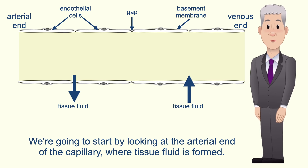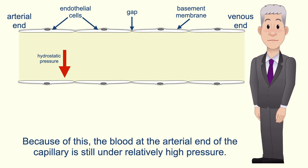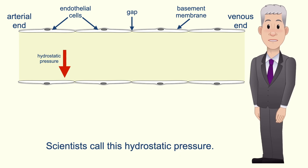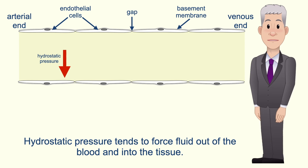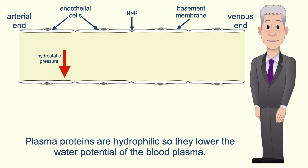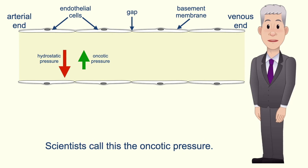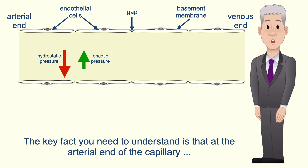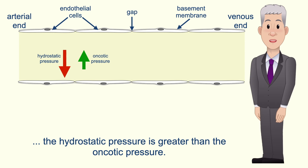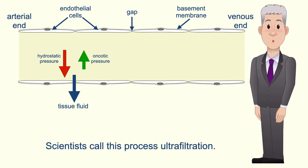At the arterial end of the capillary, the blood has just passed through an artery and an arteriole, so the blood is still under relatively high pressure. Scientists call this hydrostatic pressure, and it tends to force fluid out of the blood and into the tissue. In the blood plasma we have plasma proteins such as albumin, which are hydrophilic, so they lower the water potential of the blood plasma. Because of the plasma proteins there is a tendency for water to move back into the blood by osmosis — scientists call this the oncotic pressure. At the arterial end of the capillary, the hydrostatic pressure is greater than the oncotic pressure. This means tissue fluid is forced out of the capillary through the gaps between the endothelial cells. Scientists call this process ultrafiltration. Blood cells and plasma proteins are too large to leave, so they remain in the blood plasma.